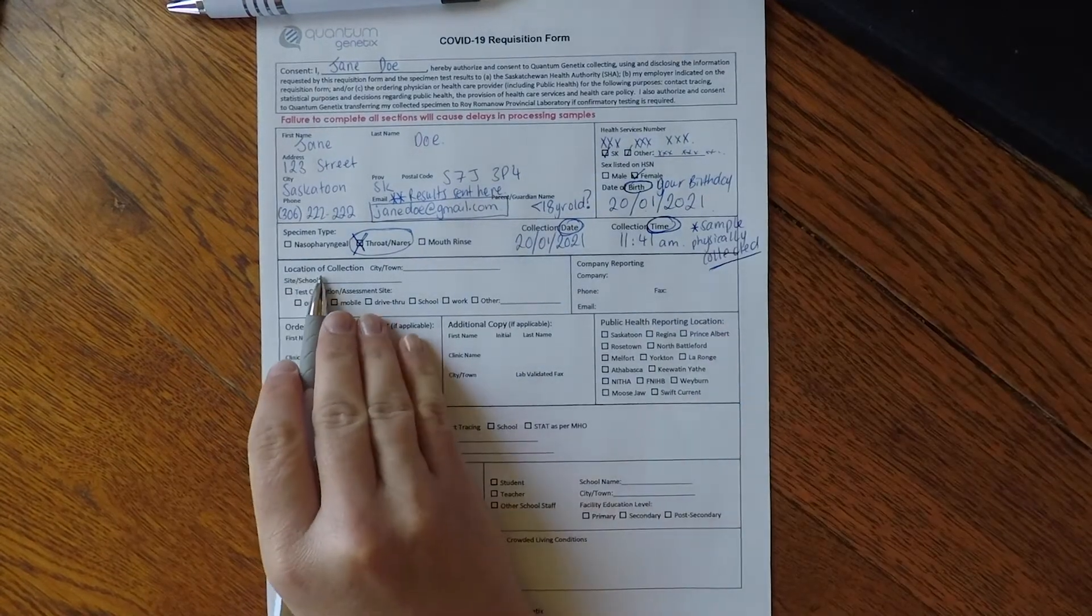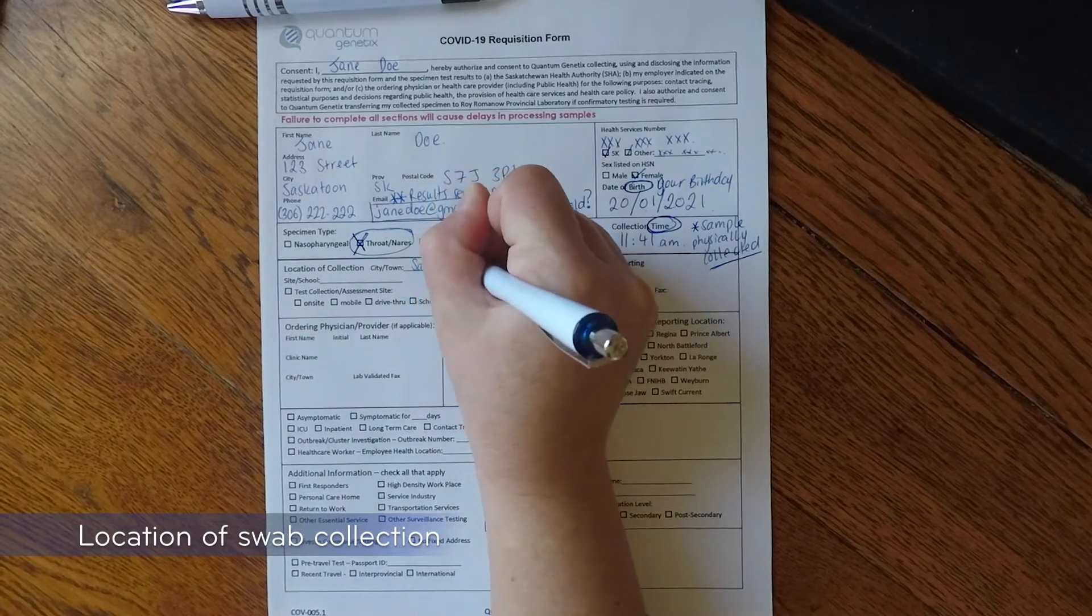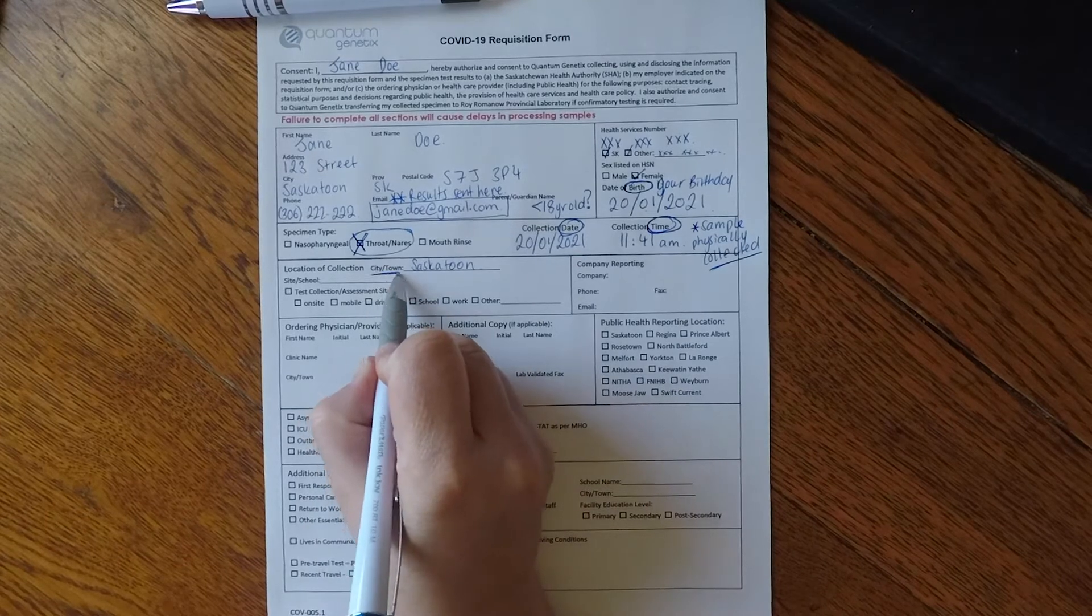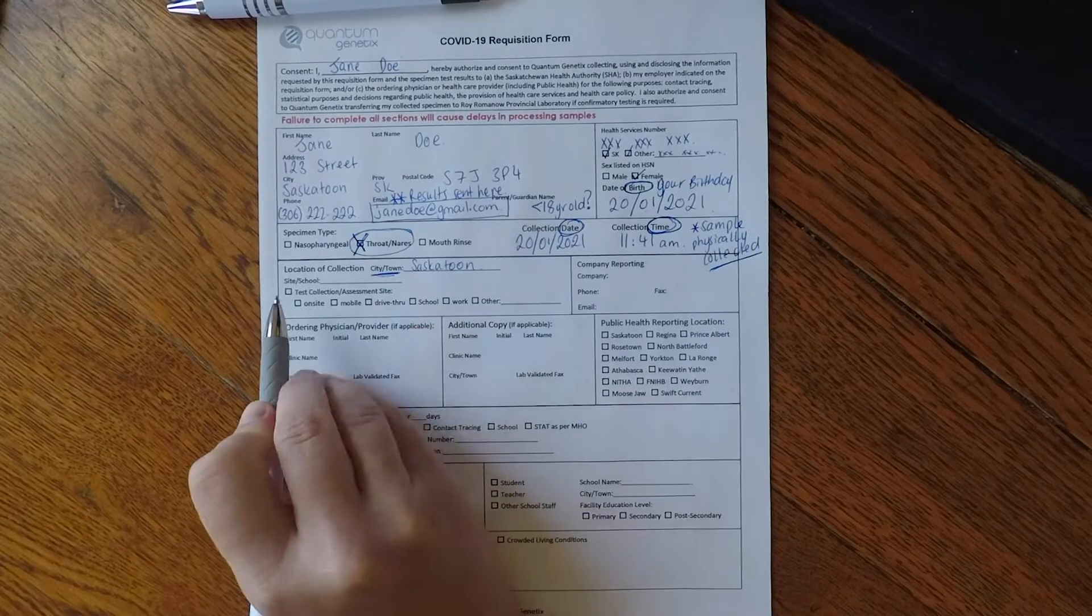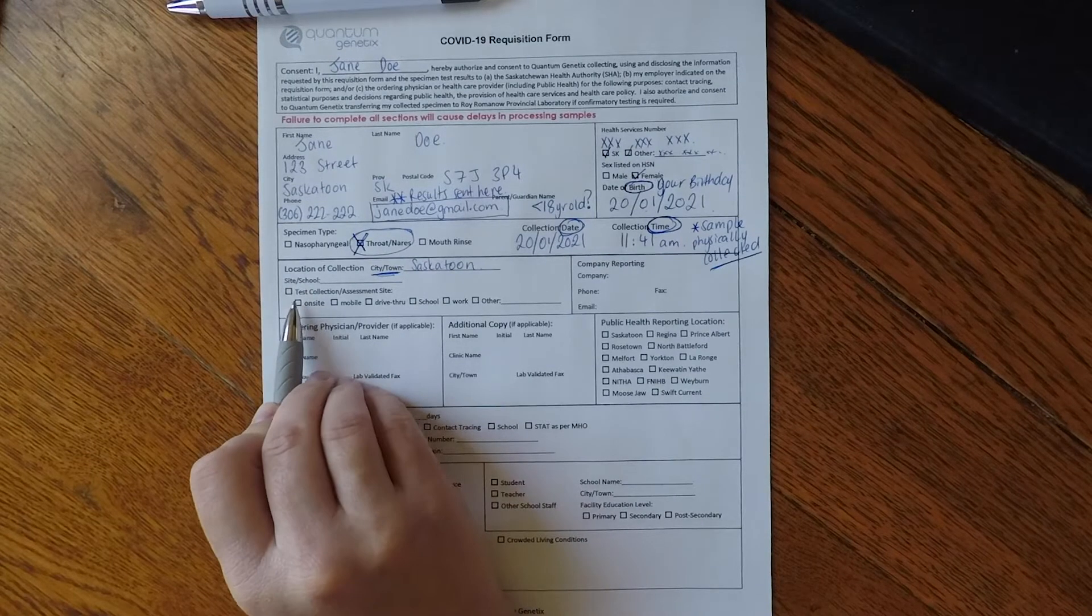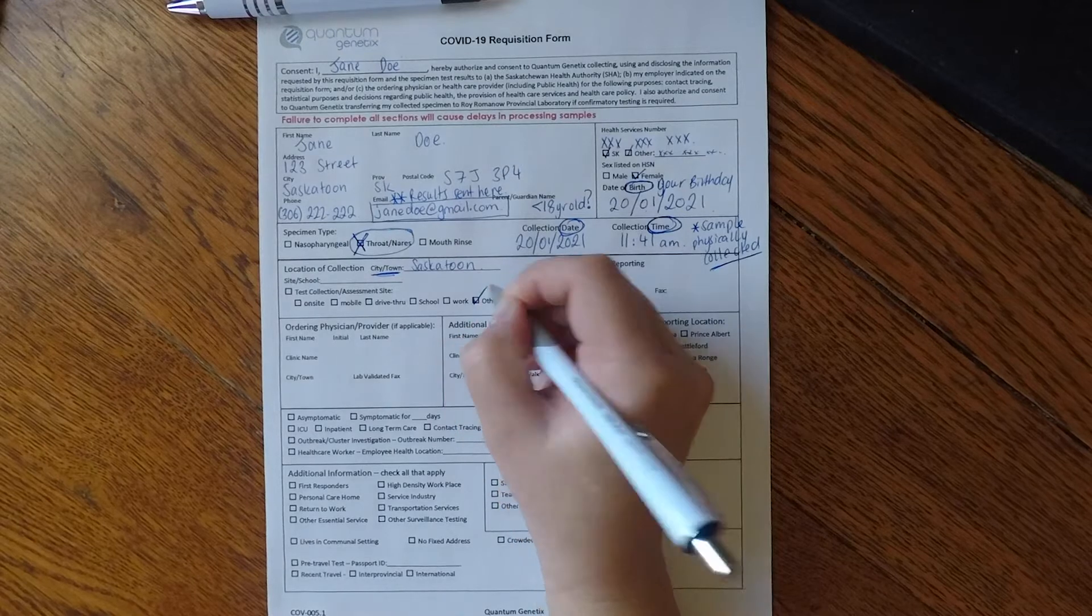Next is your location of collection. Please write the city or town where the swab was taken. Then move down to the box that says other, tick this box and write home.